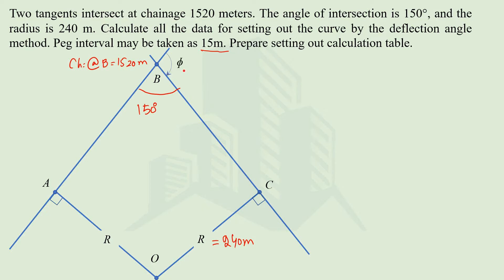The deflection angle is not directly given, but we can calculate it from the angle of intersection. Since the total angle is 180 degrees, the deflection angle would be 30 degrees.